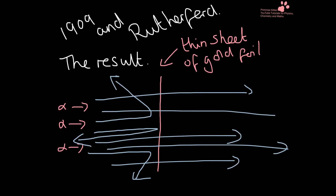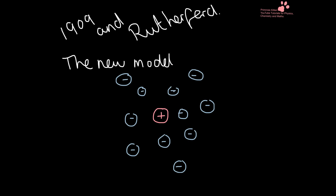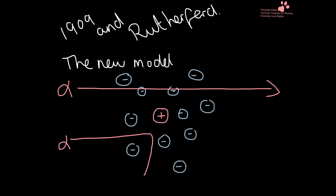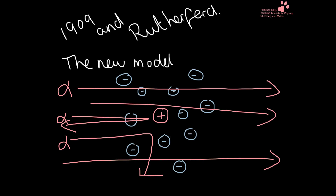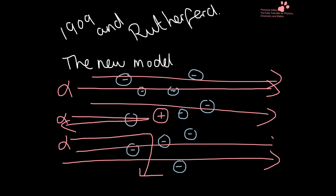This was completely the opposite to what they were expecting. The new model they came up with has an atom with a positive charge in the middle and a lot of empty space around it filled by electrons. When alpha particles passed through just electrons they went straight through; when they came close to the nucleus they were deflected; and when they hit the nucleus head-on they were fully deflected straight back. Since most went straight through, most of the atom is empty space with a very small positive nucleus.